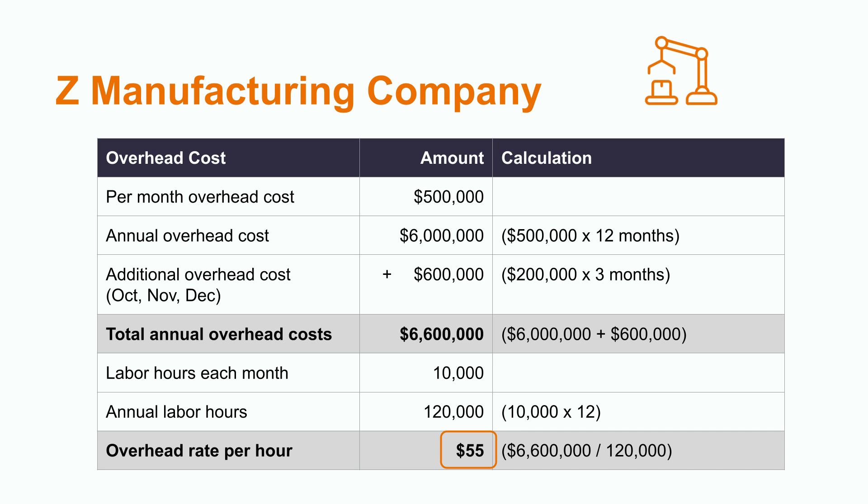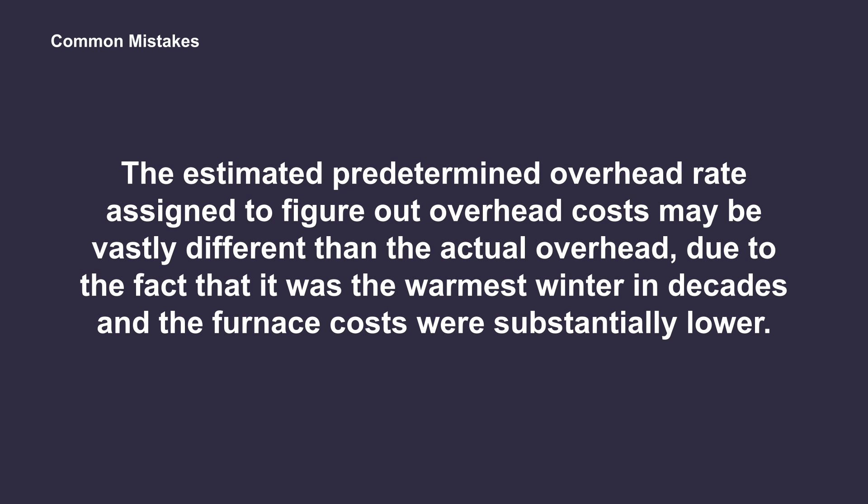So, under the normal costing method, the overhead rate is consistent for all the units produced during the accounting period. The misconception about normal costing and overhead is that there is a budgeted predetermined overhead rate assigned to figure out the overhead cost. The actual overhead cost may be vastly different if the actual overhead amount differs greatly from what was budgeted — for example, due to the fact that it was the warmest winter in decades and the furnace costs were substantially lower.